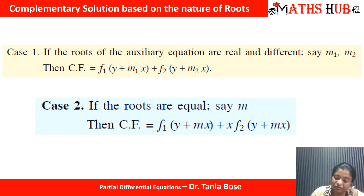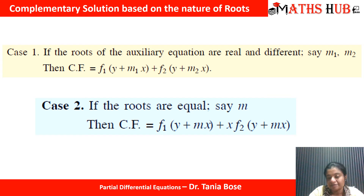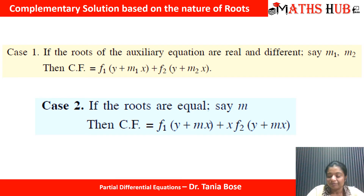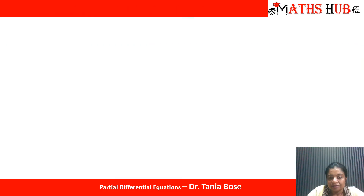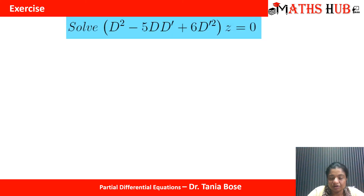When the roots are equal, the complementary function is: f₁(y + mx) + x·f₂(y + mx). So the second factor gets multiplied by x.